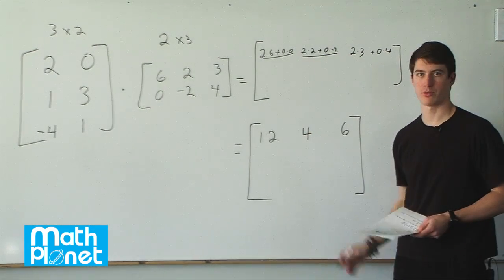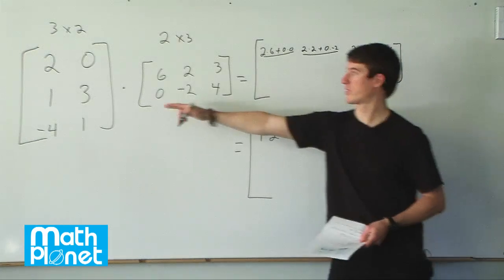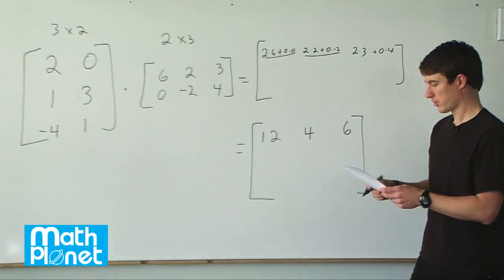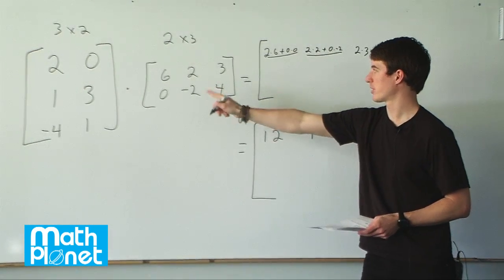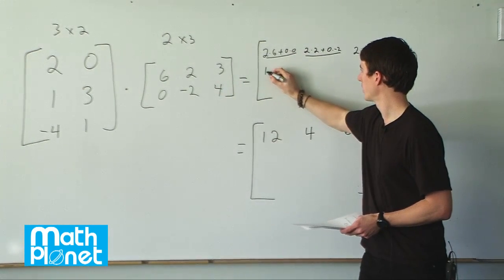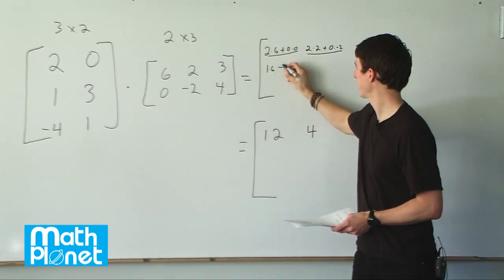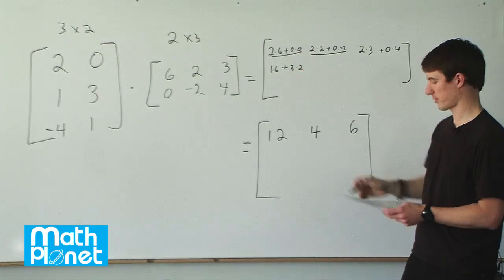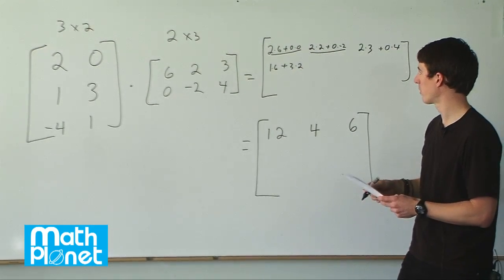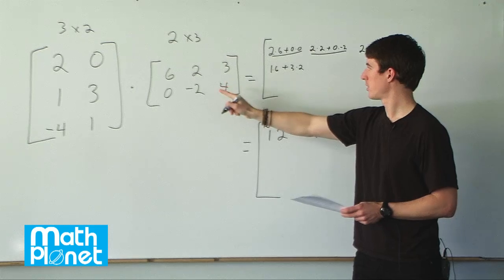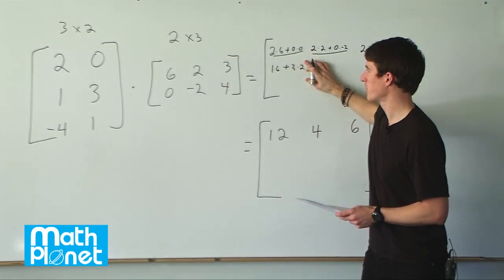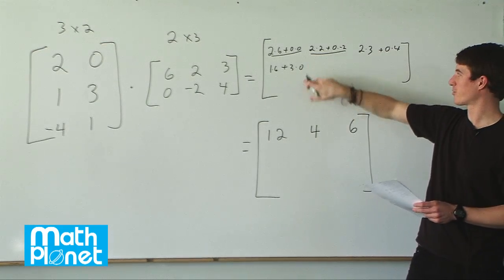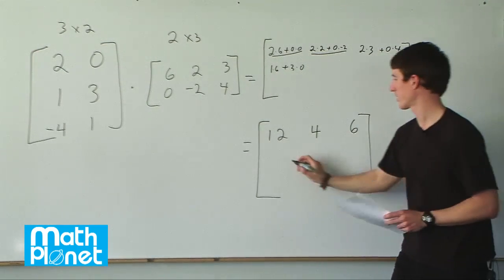Now we move on to the second row, going through one column at a time. We start with 1 times 6 plus 3 times 2. That gives us 6 plus 6, which is 12. For the next entry, it was a 0 there, so we have 1 times 6 plus 3 times 0, which gives us just 6.